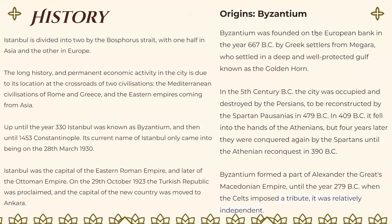And the eastern empires coming from Asia. Up until year 330, Istanbul was known as Byzantium, and then until 1453 as Constantinople. Its current name, Istanbul, only came into being on the 28th of March 1930. Istanbul was the capital of the Eastern Roman Empire and later of the Ottoman Empire. On the 29th of October 1923, the Turkish Republic was proclaimed and the capital was moved to Ankara.